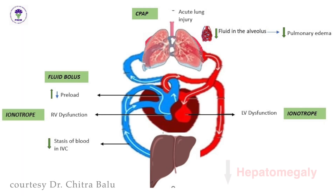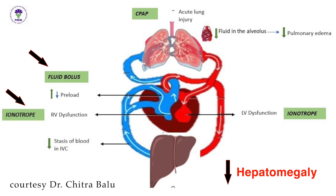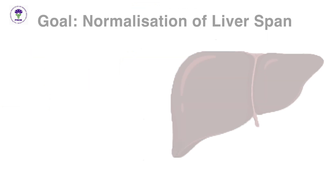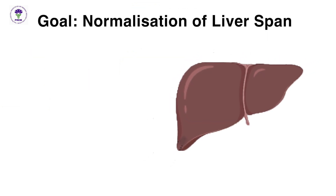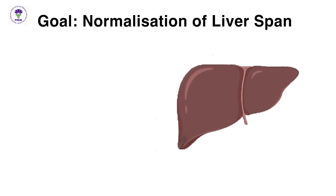Regression and normalization of hepatomegaly occurs with the administration of preload (fluid bolus), initiation of vasoactive medications to improve cardiac contractility, and the reduction of afterload through provision of CPAP. Normalization of the liver span is one of the therapeutic goals in the PREM process.